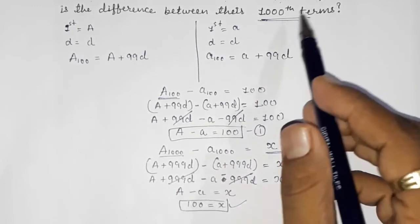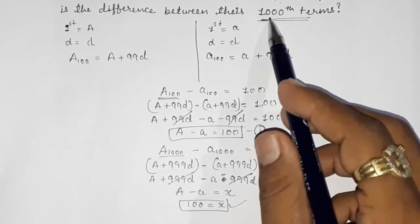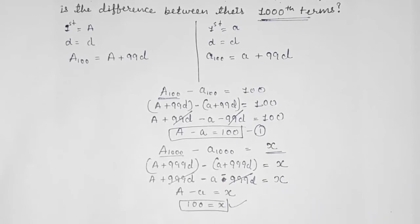Instead of this, they can give you 25,000th term or 55,000th term or 15,000th term, but you will get the same answer everywhere. So this way we can solve this sum. Thank you so much for watching my video. If you like it, please subscribe to my channel so that I can bring more such videos for you. Thank you.